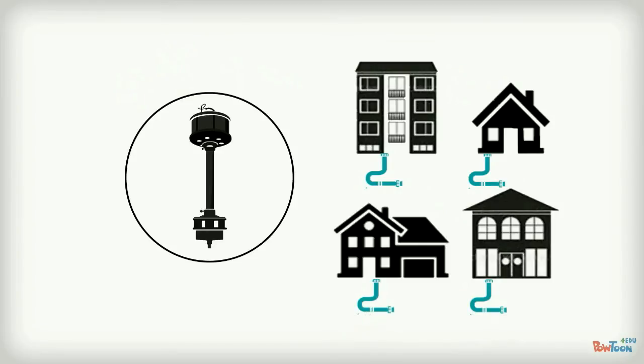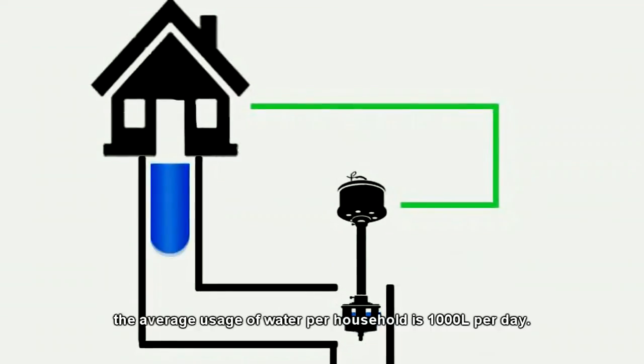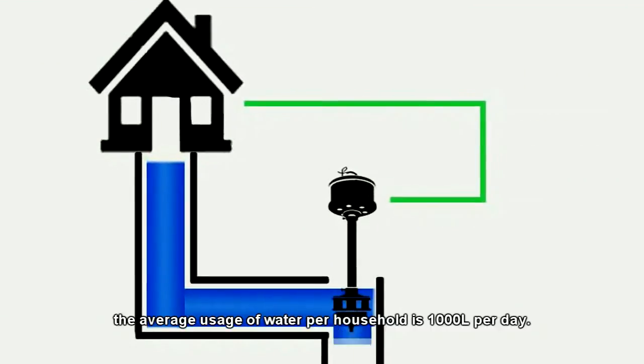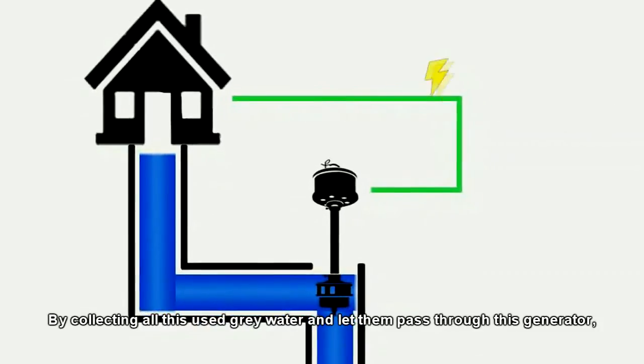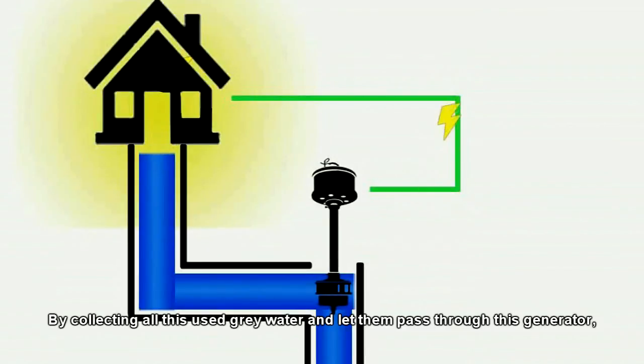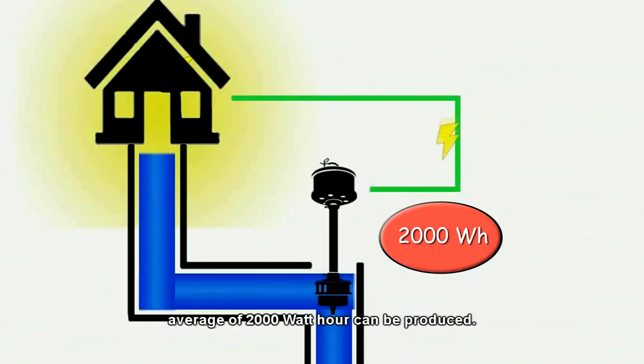For example, the average usage of water per household is 1,000 liters per day. By collecting all this used gray water and letting it pass through this generator, an average of 2,000 watt-hours can be produced.